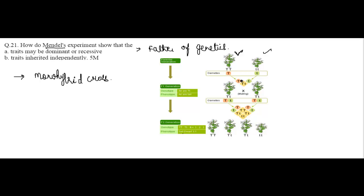In the F1 generation — that is, the first filial generation — he got all tall plants. There were no dwarf pea plants. So in the F1 generation he obtained all tall plants, and concluded that the first generation showed the trait of only one of the parent plants, that is tallness.